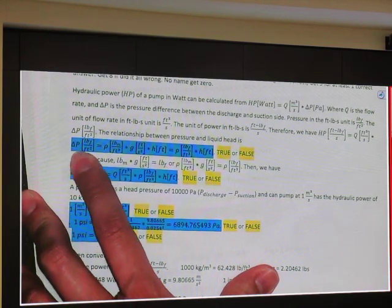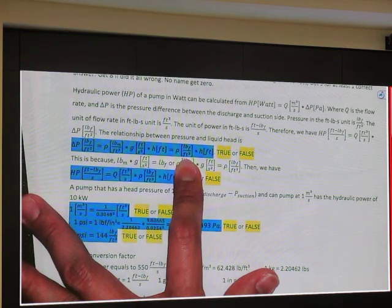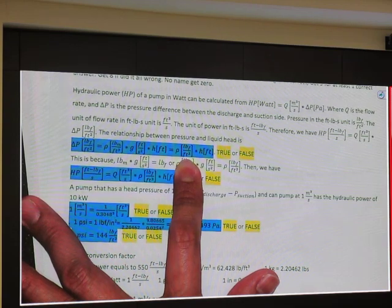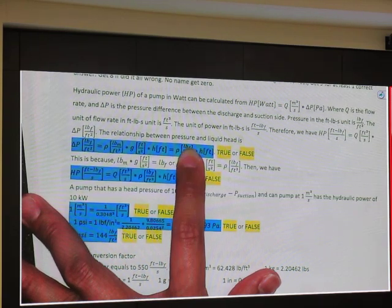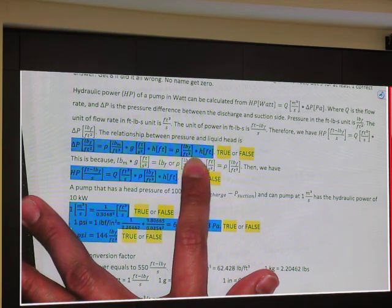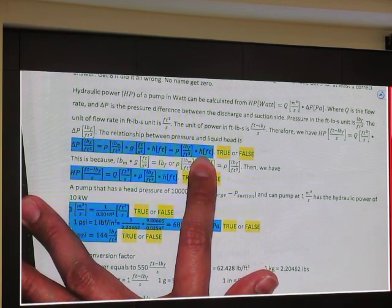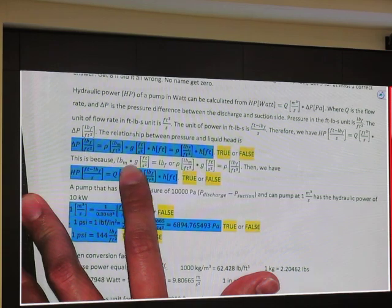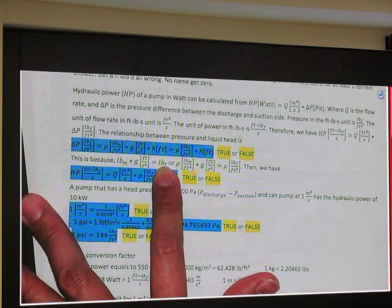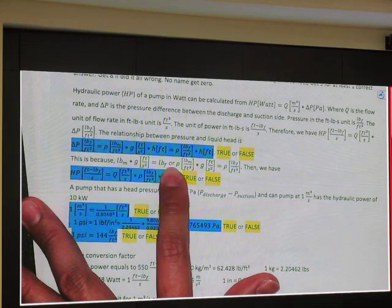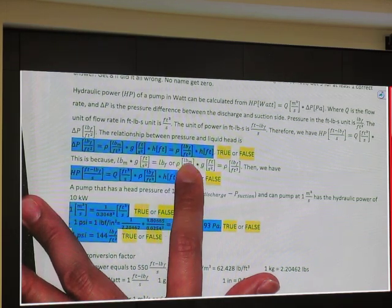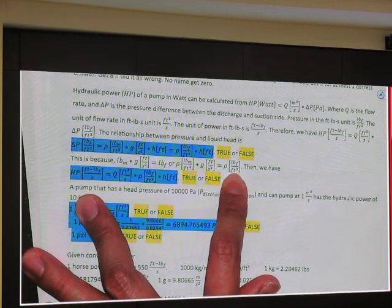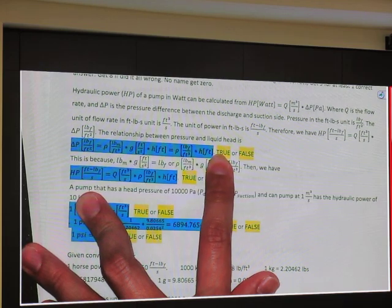If we already use pound force, we don't use g. So pressure in pound force per square foot is density - the numerical values stay the same. We use 62, it remains as 62, but the unit you can convert from pound mass to pound force per cubic foot, multiplied by h in feet. This is true because pound mass multiplied by g equals pound force. This is true.